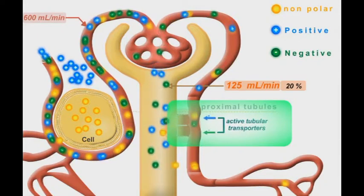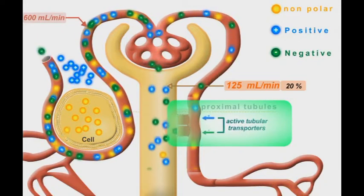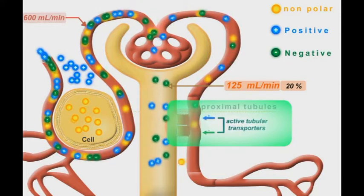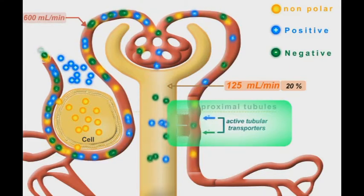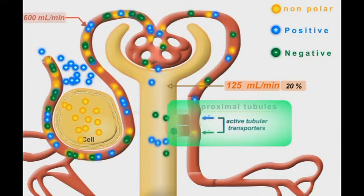Remember that the active transport system is immature in premature infants and neonates. So, toxic metabolites of some drugs can accumulate in their blood.